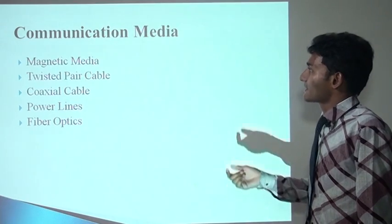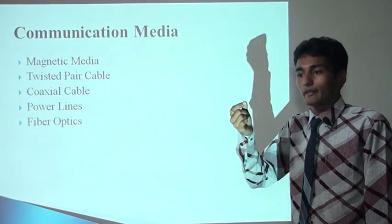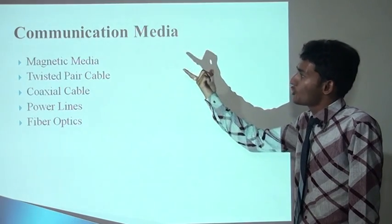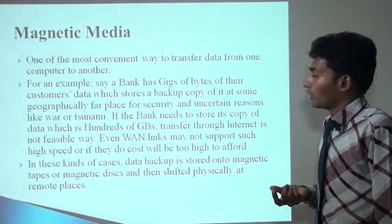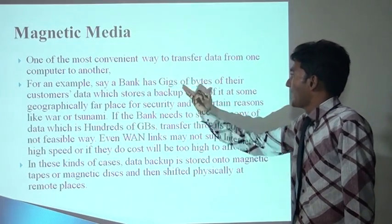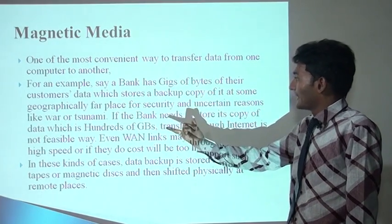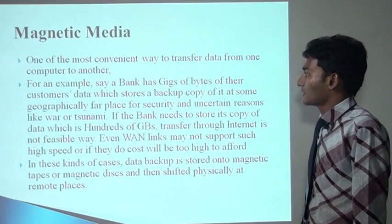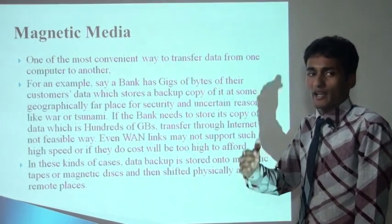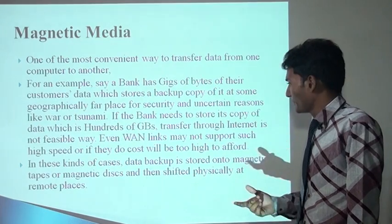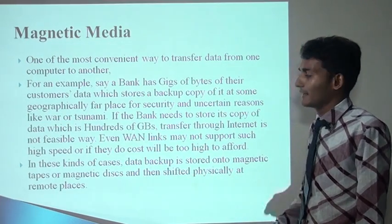Magnetic media is generally used in banking systems. A banking system has a large amount of data and cannot transfer this type of data through the internet as it requires more time. At that time, magnetic media such as magnetic disk and magnetic tape are used to store data. A bank may have gigabytes of customer data stored on magnetic disks. The bank needs to store copies of its data of hundreds of gigabytes. Transferring through the internet is possible but requires too much time, so in this kind of case, data backup is stored on magnetic tapes and then physically shifted to a remote location.